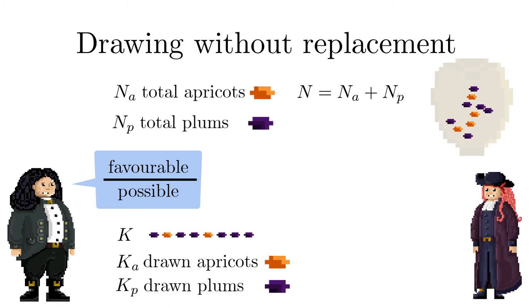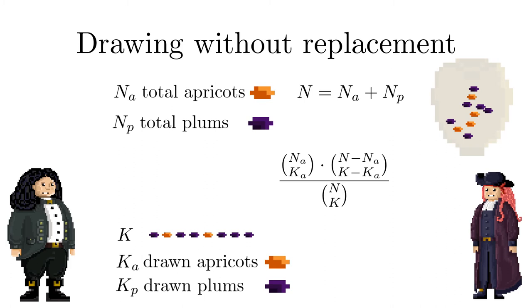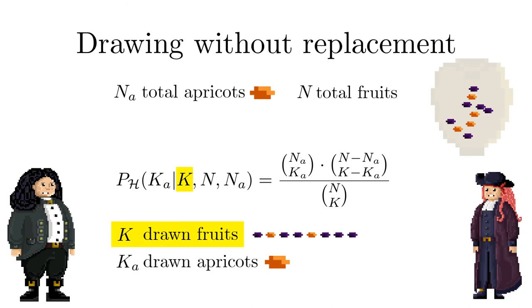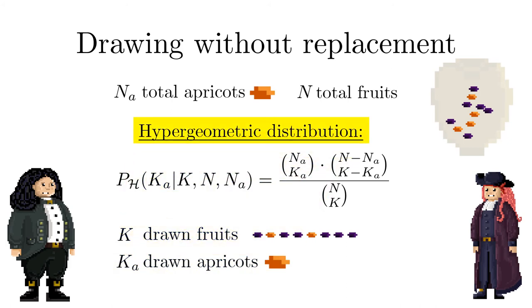An outcome in this case is a sequence of elements of apricots and plums of length k. The total number of different outcomes is given by n choose k which is the number of subsets of size k we can form. Similarly n sub a choose k sub a is the number of subsets we can form if we only consider apricots. Likewise we obtain the number of subsets we can form if we only consider plums. So the product gives the number of favorable outcomes and for the desired probability we merely have to divide by the total number of outcomes. Finally when k is the number of fruits drawn from the pot with n sub a apricots of n fruits in total the probability to find k sub a apricots is described by the hypergeometric distribution.